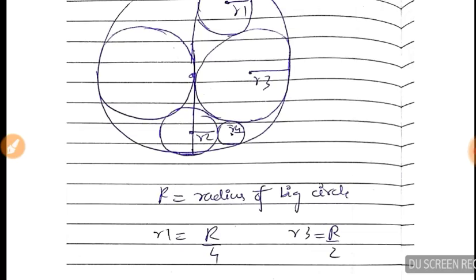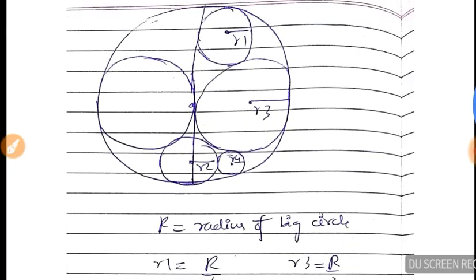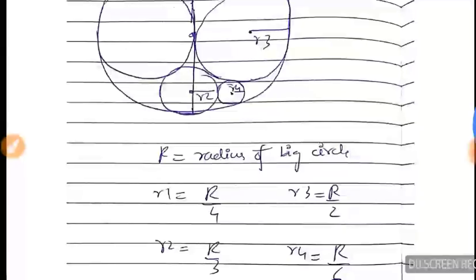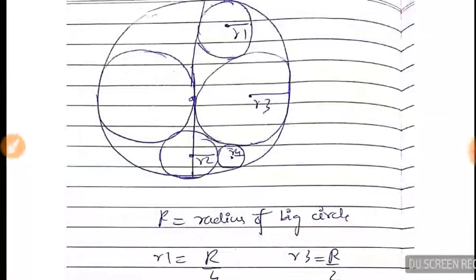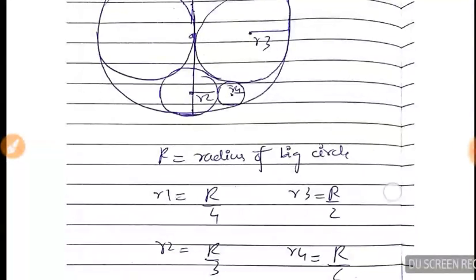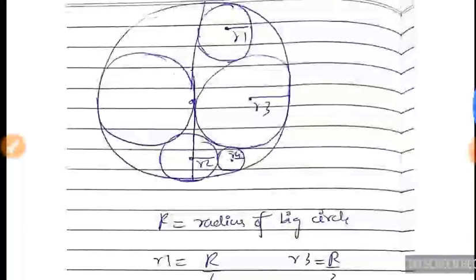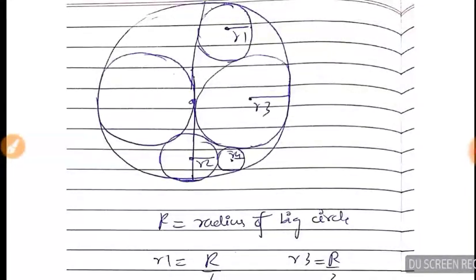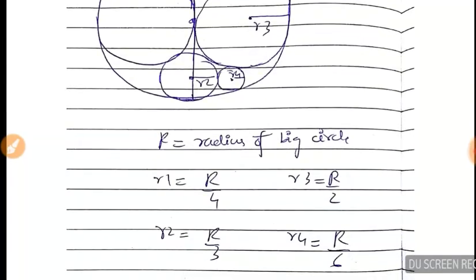R1's value will be capital R by 4 — but note the position it's placed at, along the diameter. R1 = R/4, R2 = R/3, R3 = R/2 — that's common sense since R3 spans half the big circle. R4 = R/6. So in total there are 5 circles: 1 big and 4 smaller ones.